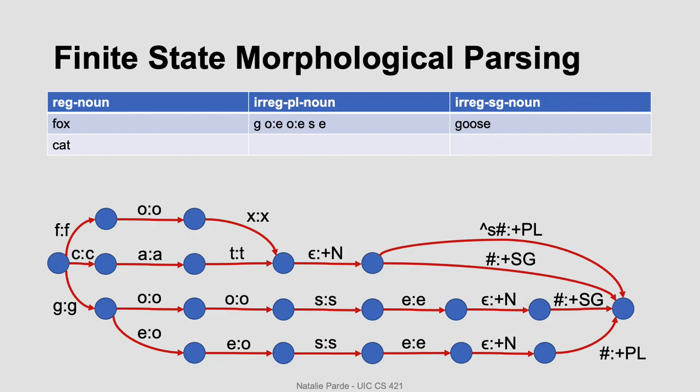Zooming in even further to this process, the inner mechanics of those broad nodes might look like something closer to this. To produce the morphological parse for 'foxes', we could just start at the first character of the word and follow the transitions accordingly. Here we reach an epsilon transition, so remember that allows us to advance to the next state without moving forward in our sequence.